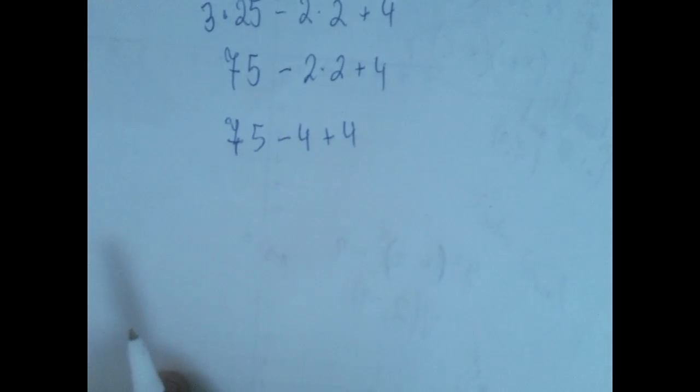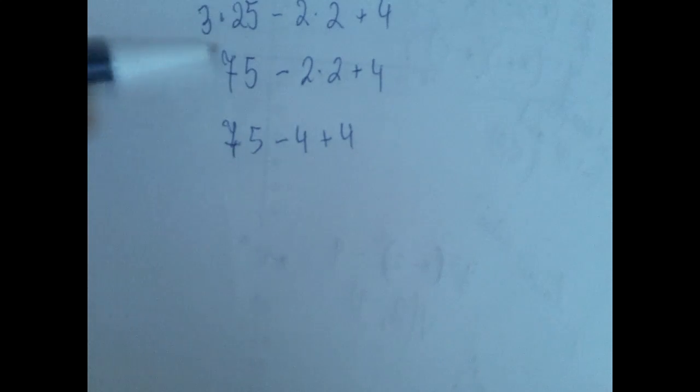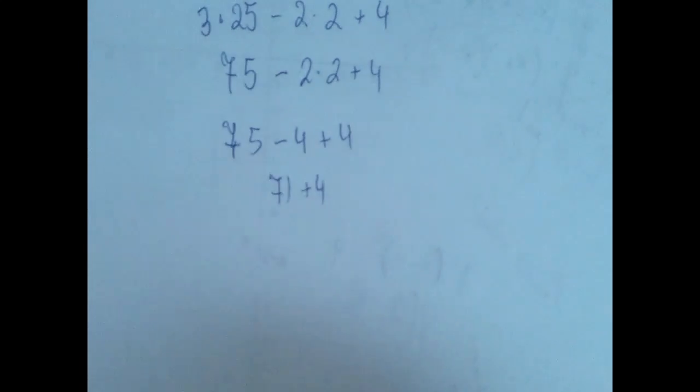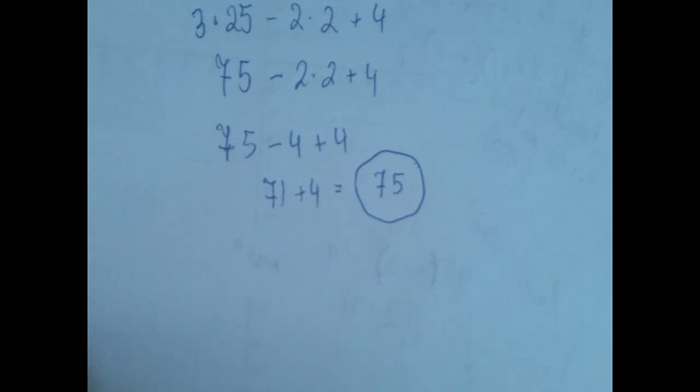And now subtractions, additions left to right. 75 minus 4 is 71. And 71 plus 4 is 75. Let's see another one.